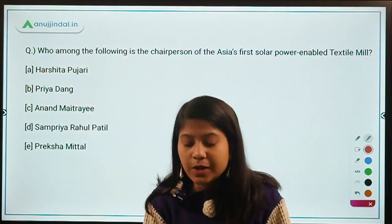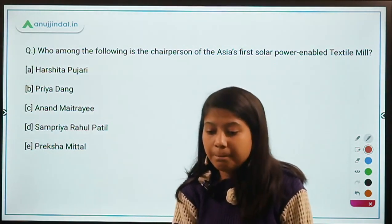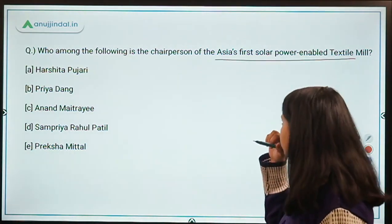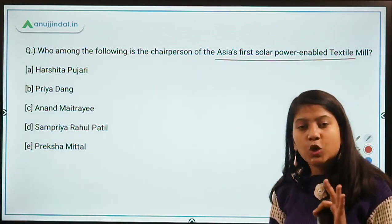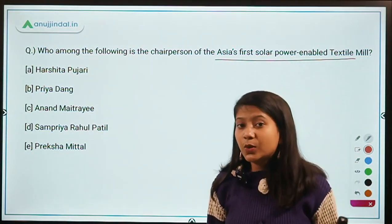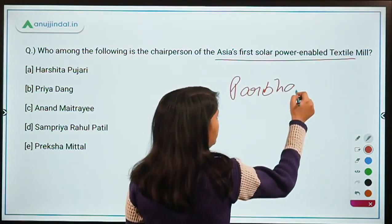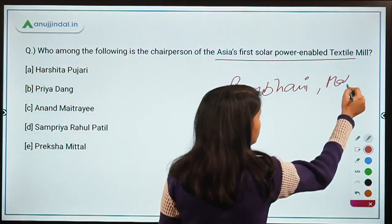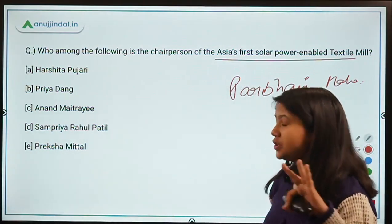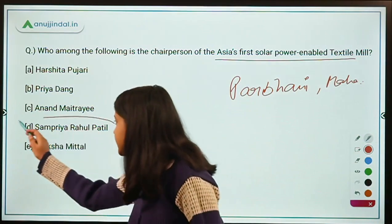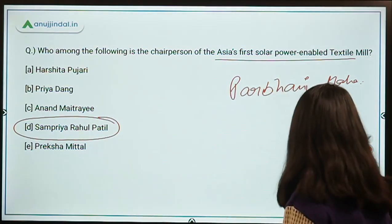Who is the chairperson of Asia's first solar power-enabled textile mill? This mill is named Jay Bhavani Women's Co-operative Textile Mill and is located in Parbhani, Maharashtra. The chairperson of this textile mill is Option D — Sampriya Rahul Patil. Remember these facts related to this question.